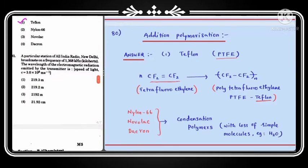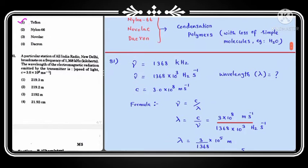Question number 81: a particular station of All India Radio, New Delhi, broadcasts on a frequency of 1368 kilohertz. The wavelength of the electromagnetic radiation emitted by the transmitter is to be found. Speed of light is 3×10⁸ m/s. Frequency is 1368 kHz = 1368×10³ Hz. Using ν = c/λ, rearranged as λ = c/ν.